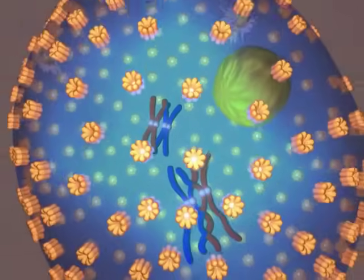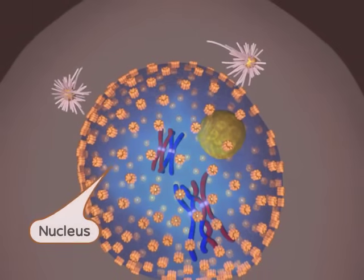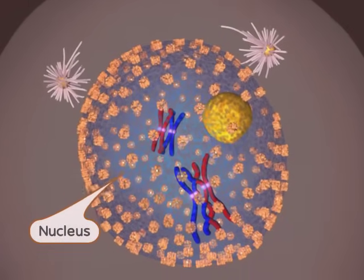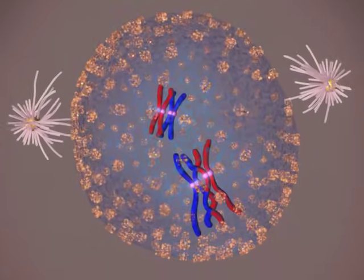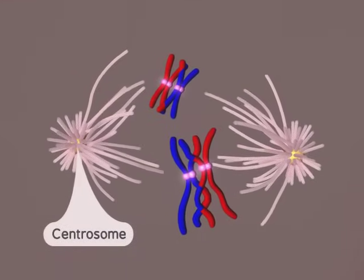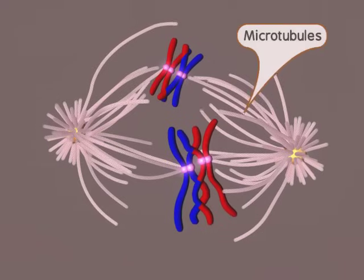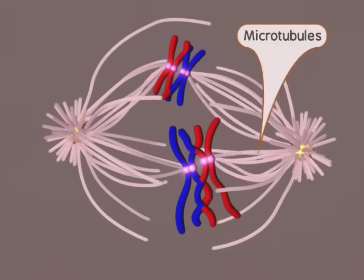There are several more key steps in prophase I. The nuclear membrane begins to break down. Then, the two centrosomes migrate to opposite ends of the cell and microtubules appear. The microtubules then attach to the chromosomes.